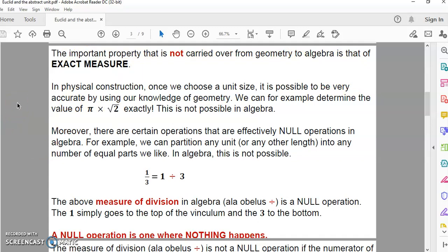In physical construction, once we choose a unit size, it is possible to be very accurate using our knowledge of geometry. In our minds, for example, we can determine the value of pi times the square root of 2 exactly, to the point where you can say it is the product and there is no error whatsoever.